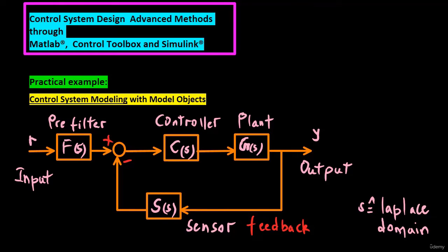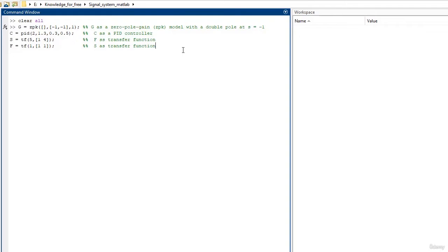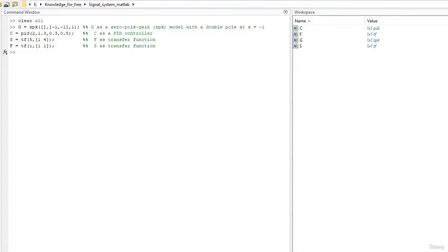For example, the following control system contains a pre-filter F, a plant G, and a controller C, arranged in a single-loop configuration. The model also includes a representation of sensor dynamics S. You can represent each of the components as a model object. You do not need to use the same type of model object for each component. For example, represent the plant G as a zero-pole gain model, with the double-pole at S equals minus 1, C as a PID controller, and F and S as transfer functions. You can then combine these elements to build models that represent your control system or the control system as a whole. For example, create the open-loop response SGC.